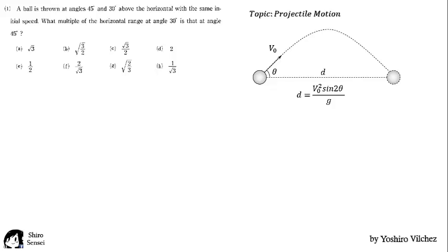Since the problem says that the ball is thrown with the same initial speed v₀, now we evaluate each situation. For 45 degrees, the horizontal range is d equals v₀² times sine of 90° over g. And for 30 degrees, it's d equals v₀² times sine of 60° over g.